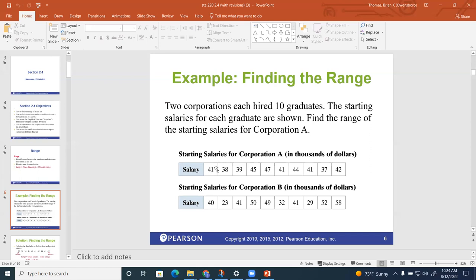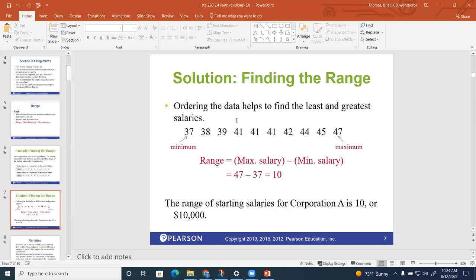It would be nicer if it was in some type of order. And then we see the salaries of corporation B, and again, they're not in order. But all we're asked to do is find the range of each one of these. So notice how, since we're talking about corporation A, we can put that data in the right order. And then we can see that the minimum value is 37 and the maximum value is 47.